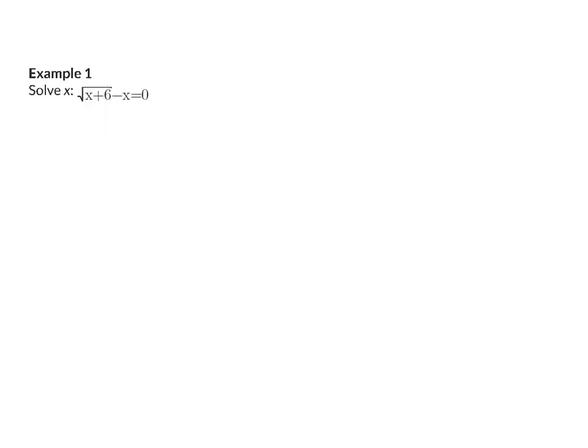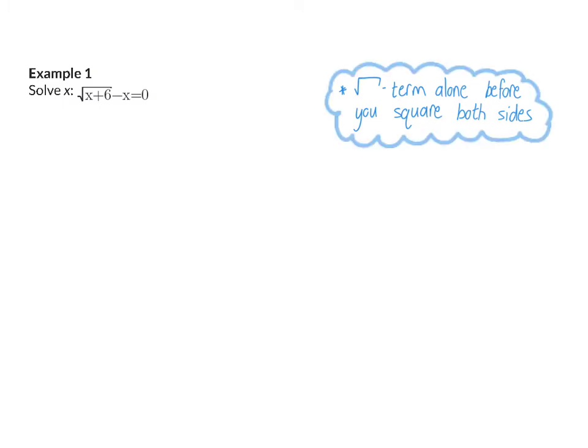Let's look at examples where the square root is given in the question. In example 1, we have our square root equation and we would like to square both sides to get rid of the square root. An important thing to remember is that you should only square once the square root term is alone on one side. So we start by taking the minus x and adding it to the right.